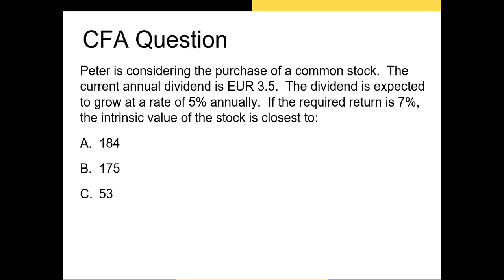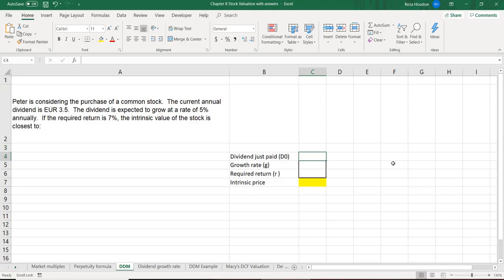Peter is considering the purchase of a common stock. The current annual dividend is 3.5 euros and the dividend is expected to grow at a 5% annual rate. If the required return is 7%, what is the intrinsic value of the stock? Let's move over to Excel to find the answer.